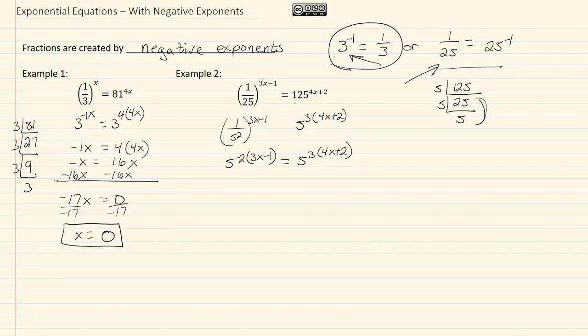So I have negative two times three x minus one equal to three times four x plus two. Distributing here, I get negative six x plus two equal to twelve x plus six.